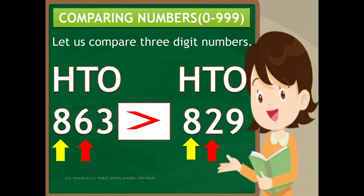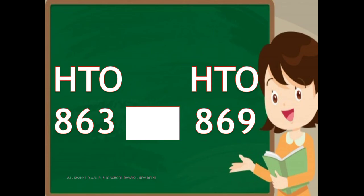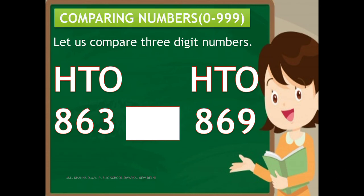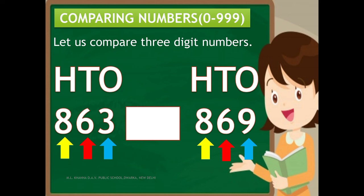Now let us change 829 to 869 and compare 863 and 869. Start by comparing the leftmost digit — both hundreds digits are the same. We move to the tens place — both tens digits are also the same. Now we move to the ones place: 3 ones and 9 ones. 3 ones are less than 9 ones, so 863 is less than 869.